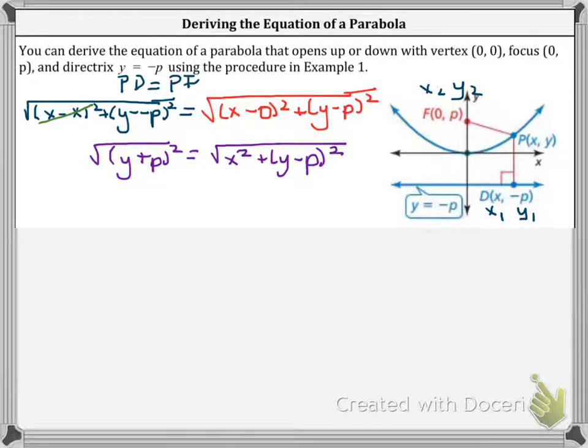Now we have to square both sides to get rid of the square root. Now we have Y plus P squared equals X squared plus Y minus P squared.